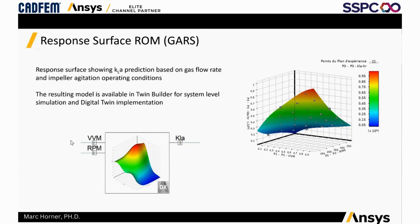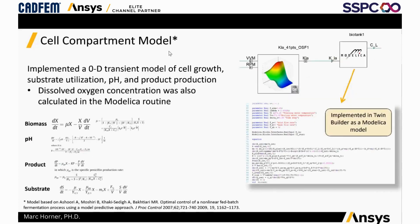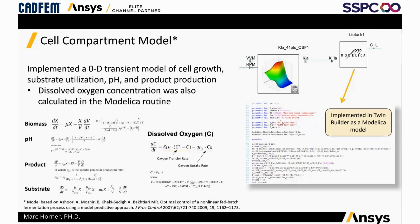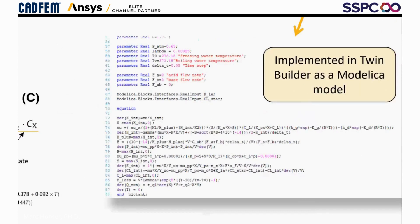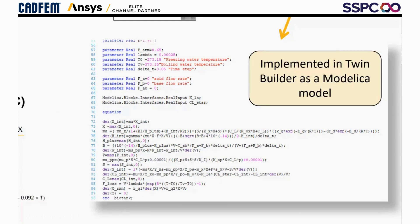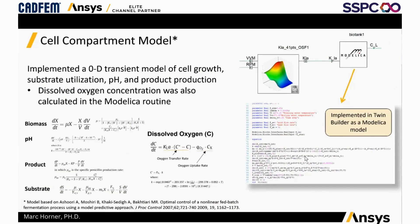The reduced order model takes the volume rate of gas introduced into the tank and the agitation rate of the impeller as inputs, and outputs KLA. For the metabolic model, we took advantage of Modelica modeling capabilities within TwinBuilder to code the first-order ODEs for biomass, pH, product, substrate, and dissolved oxygen. Modelica makes it very straightforward to implement and solve these ODEs. The Modelica code runs so quickly that it doesn't slow down the process at all, so no ROM was needed.